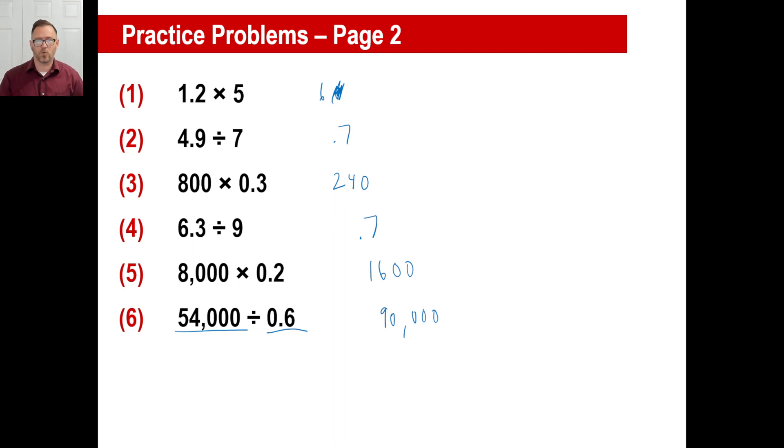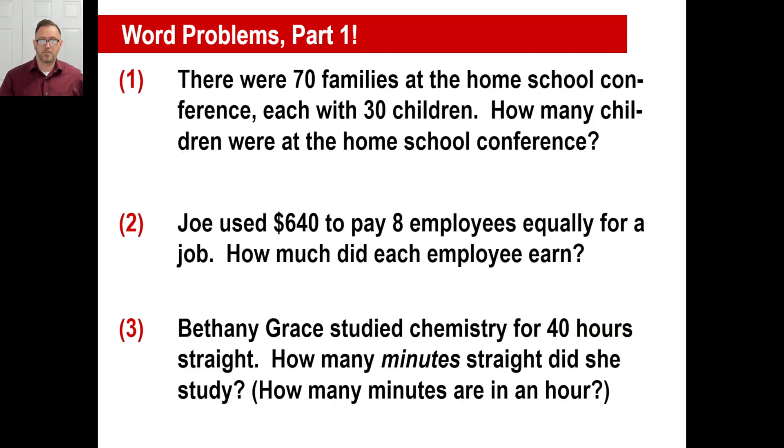A couple of very quick pictures of word problems. Pause it and try the first one. Or actually, try all three of them. First one. There were 70 families at the homeschool conference, each with 30 children. How many children were at the homeschool conference? Seven times three, two zeros. That's a couple of those big old buses you see at the homeschool conference.